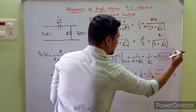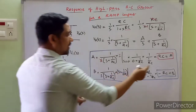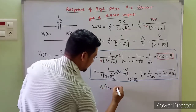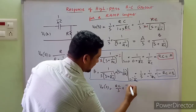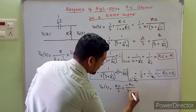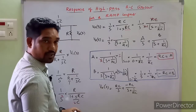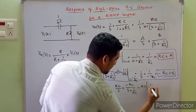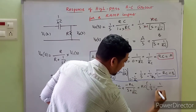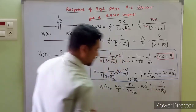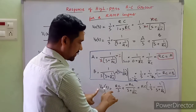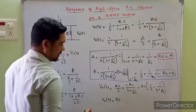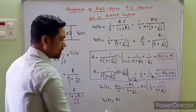Plugging in the values A = RC and B = −RC back into the partial fractions: v_naught(s) = RC/s − RC/(s + 1/RC). Taking RC as a common factor gives v_naught(s) = RC times [1/s − 1/(s + 1/RC)].